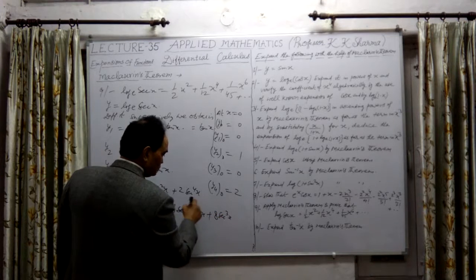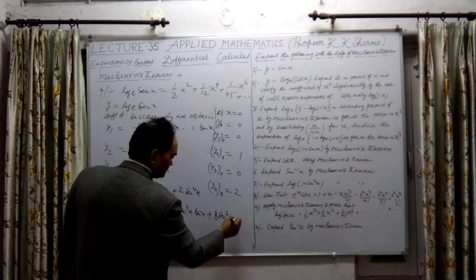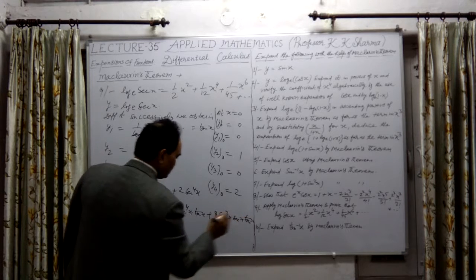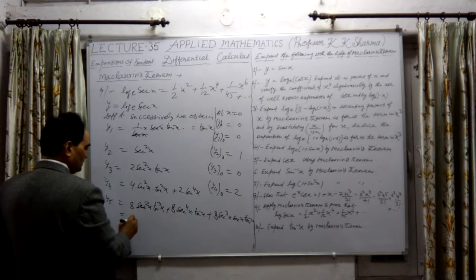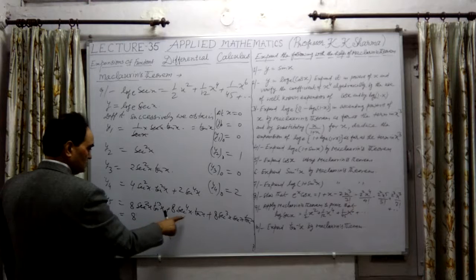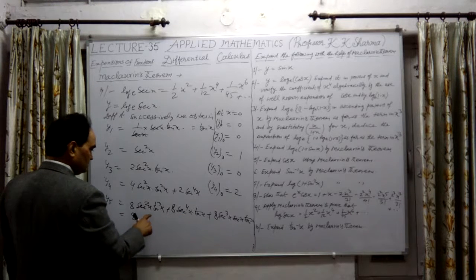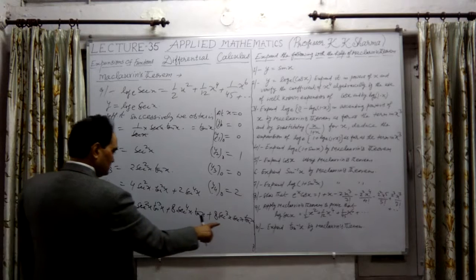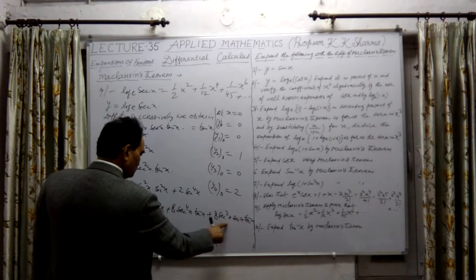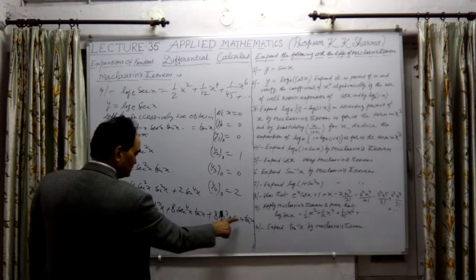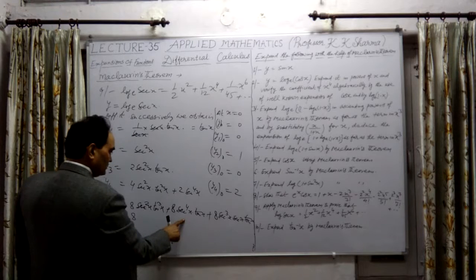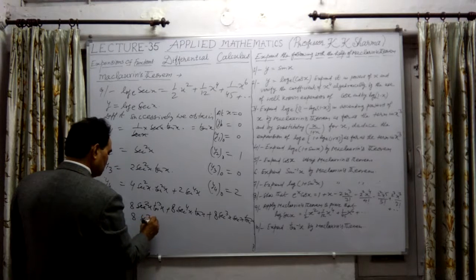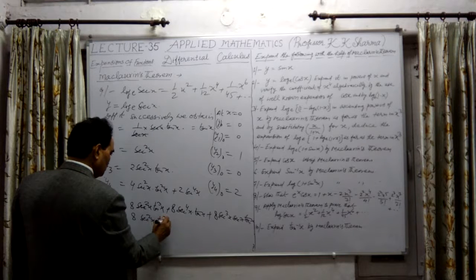Qx into 2nd x is for the differentiator, 2nd x into 10x. This is 8 into... ok not the same, this is a similar term I think. 2nd 4x into 10x - ok these two are similar terms. 2nd 4x into 10x, 2nd 4x into 16, 8 into 2nd square x into 10 cube x.